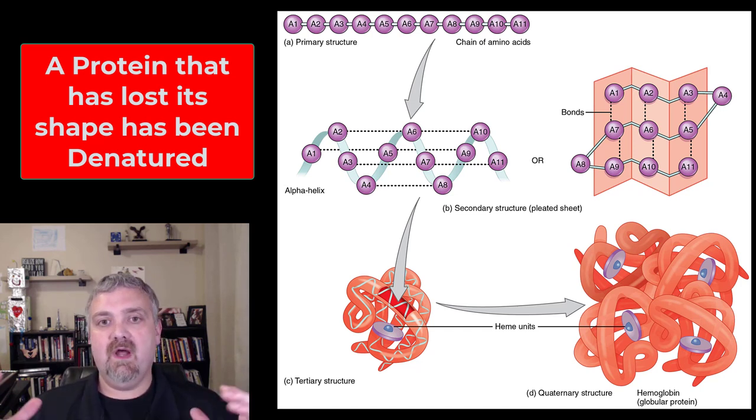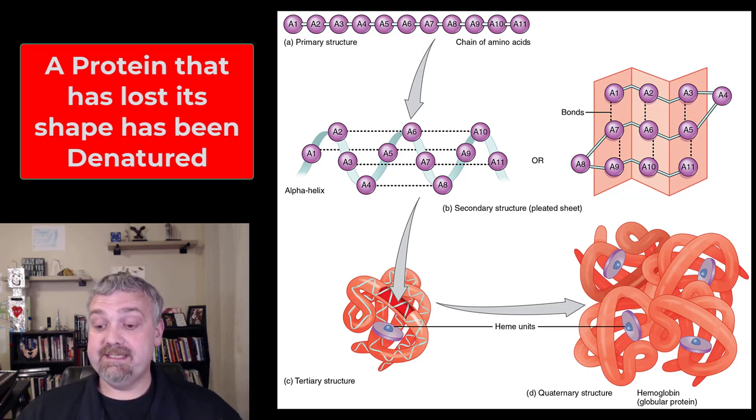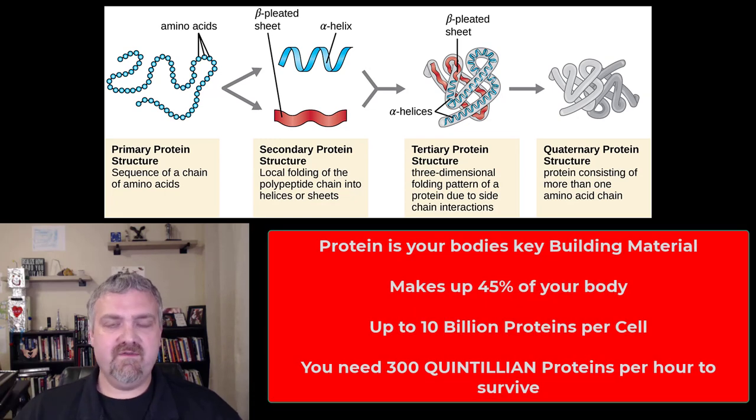Here we're going to talk about the primary, secondary, tertiary, and quaternary structure of proteins. But first, a few more facts about how important protein is. We talk about carbs and lipids as fuel sources, but proteins are the building material in the human body. Besides water, you are protein—protein makes up 45% of your body. Collagen is actually the most common protein in your body. It's all over the place.